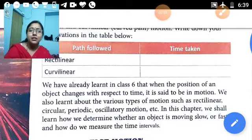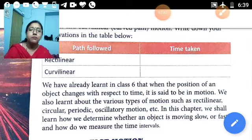You have already learned in class 6 when the position of an object changes with respect to time, it is said to be in motion. We also learned about the various types of motion. That means motions are mainly of 4 types.